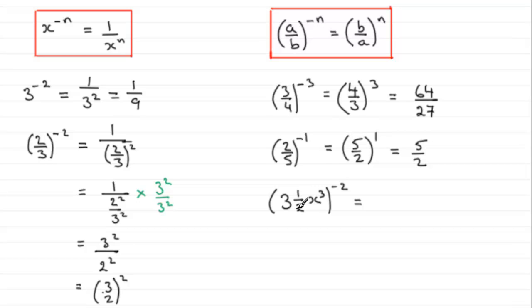And 3 and a half is the same as 7 over 2. So we've got 7 over 2, and then it's multiplied by x cubed. So I'm going to say that that's 7x cubed over 2, and it's all to the power minus 2.